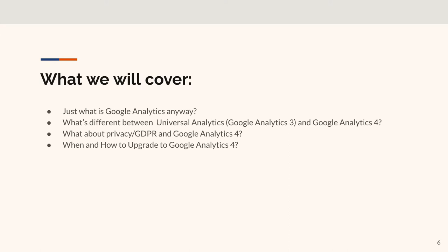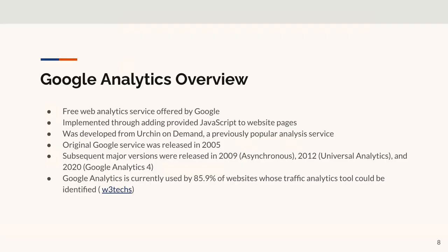So what are we going to cover? What is Google Analytics anyway? What are the differences between Universal Analytics, Google Analytics 3, and Google Analytics 4? What about privacy and GDPR? And how and when to upgrade to Google Analytics 4? So Google Analytics - what is it? At the highest level, it is a free analytics service offered by Google, implemented via JavaScript added to the pages of a website. Page loads, JavaScript runs, stuff is tracked.